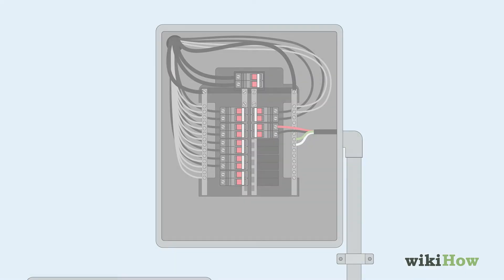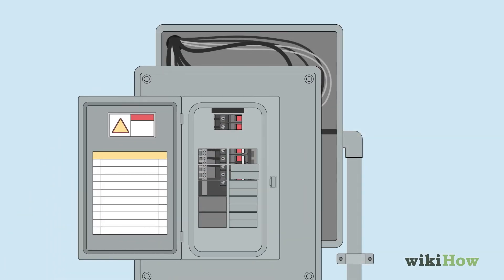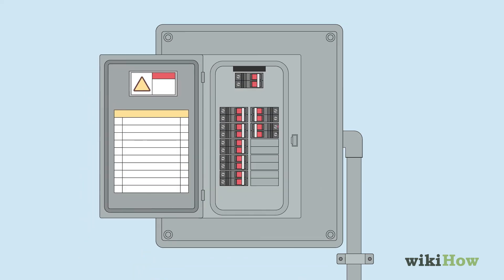Remove the knockout panels that line up with the new breaker on the faceplate of your circuit box. Finally, screw the cover back in place and switch the main power back on.